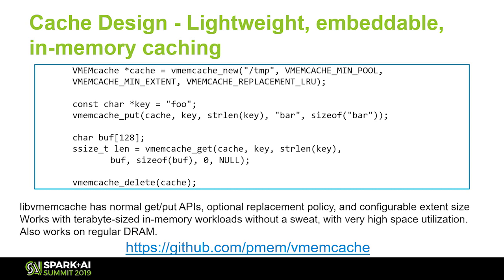In conclusion, libvmcache — the cache we implemented — provides a very simple interface to get persistent memory and cache data through simple get/put interfaces. This is an open source project; if you are interested in learning more, the link on the slide takes you to the GitHub page.